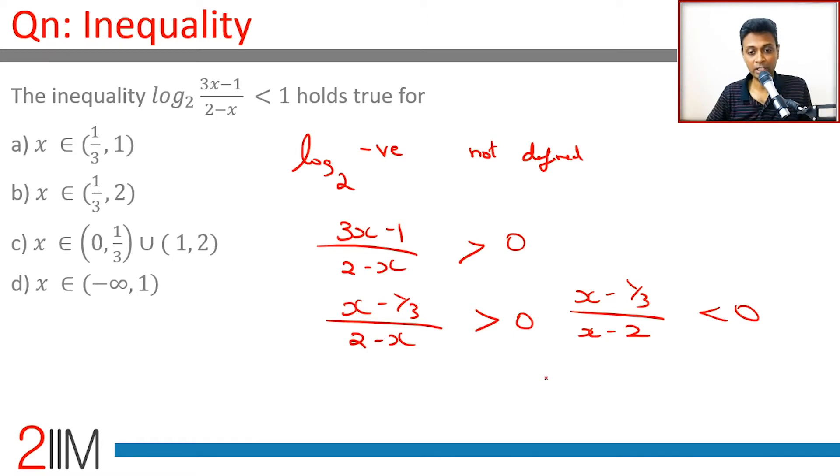Why am I writing it as x - 1/3? It's 3 times (x - 1/3); the 3 disappears. So (x - 1/3)/(2 - x) is greater than 0, or (x - 1/3)/(x - 2) is less than 0. So x should belong to the range 1/3 to 2. This is a starting point, even without going to the inequality part.